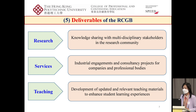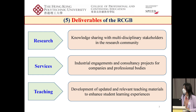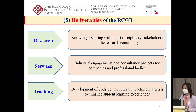What are the deliverables of our research center? We have three aspects. First, research: we will have knowledge sharing with multidisciplinary stakeholders in the research community, with cross-discipline research working alongside tourism, engineering, science, and social sciences, in addition to business. Second, services: we will have industrial engagement and consultancy projects for companies and professional bodies. Third, teaching: the development of updated and relevant teaching materials to enhance student learning experiences, integrating knowledge created from research activities.